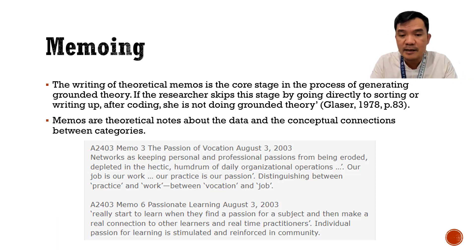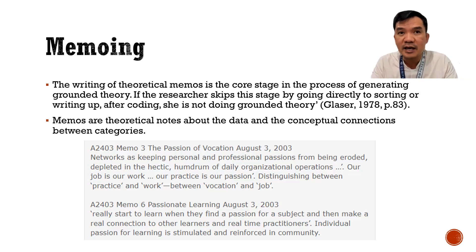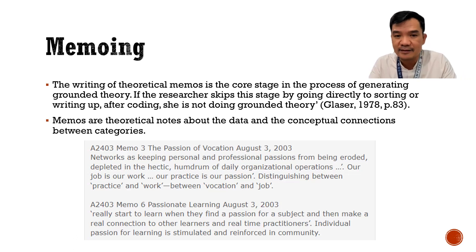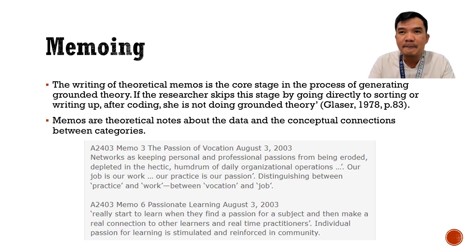Memos are theoretical notes about the data and the conceptual connectedness between categories. Every time you have a conjecture, assumption, or hypothesis, you just write it in the memos. This will remind you later during memo sorting of what the relationships of categories could be. If memos actually define the relationship between two categories, or if you can find it frequently in most of your memos, then you can define the relationship of various categories. Memoing can also include other concepts or things you believe are important in the formulation of your theory.